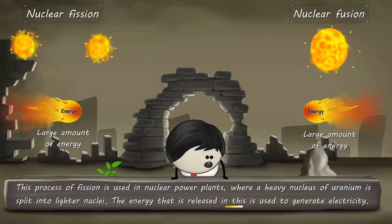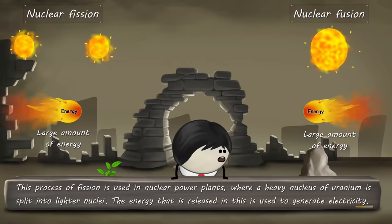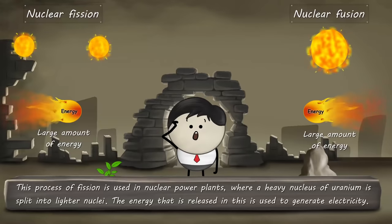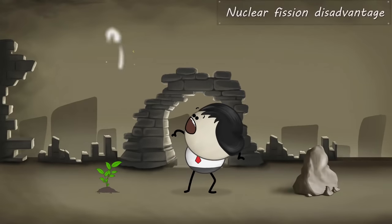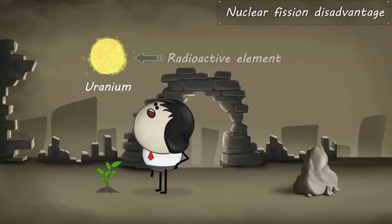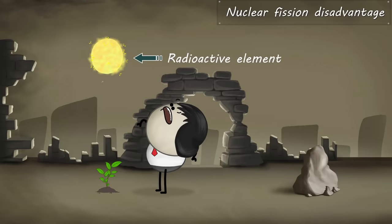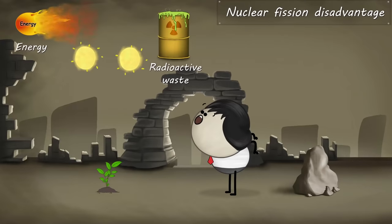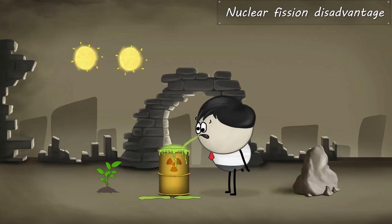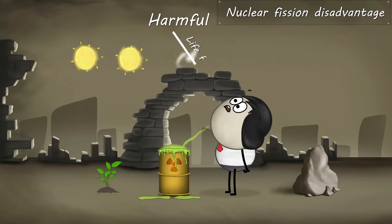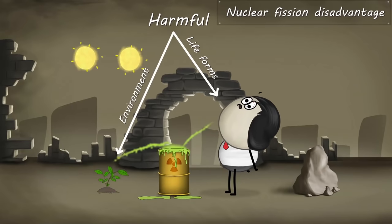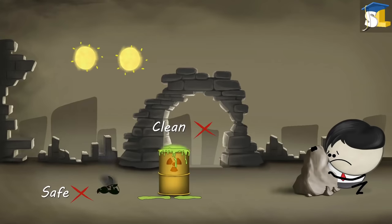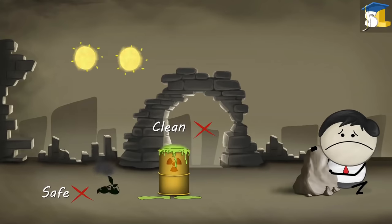The energy that is released is used to generate electricity. However, there is a major disadvantage of nuclear fission. Wondering what it is? The major disadvantage is that uranium is a radioactive element. When uranium undergoes fission, it generates radioactive waste along with energy. This radioactive waste is very harmful for most life forms and the environment.